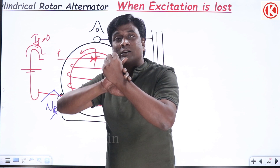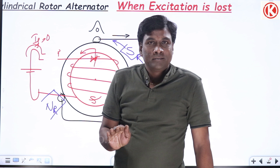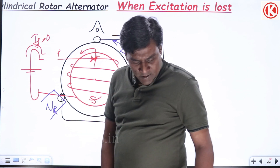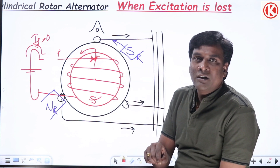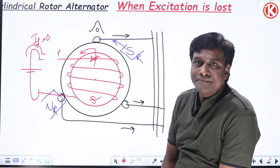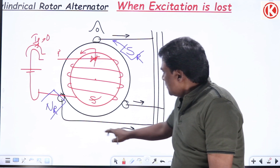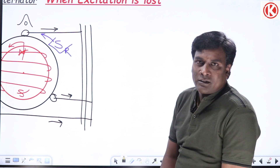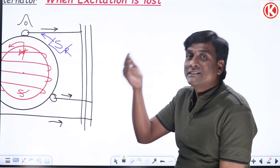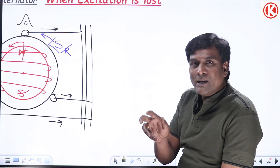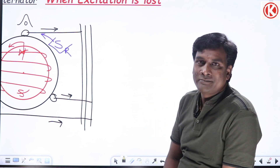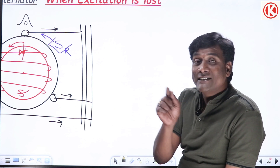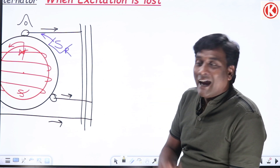Once the poles disappear, prime mover power input is there but back torque is not there, so the rotor will accelerate. The over-speeding relay in the alternator will recognize this fault and give a signal to open the circuit. Now, the idea that any rotor rotating above synchronous speed automatically becomes an induction generator is wrong. There are two basic conditions: the number of poles of the stator and rotor must be the same, and the stator and rotor MMFs must be stationary in space with a non-zero angular displacement.